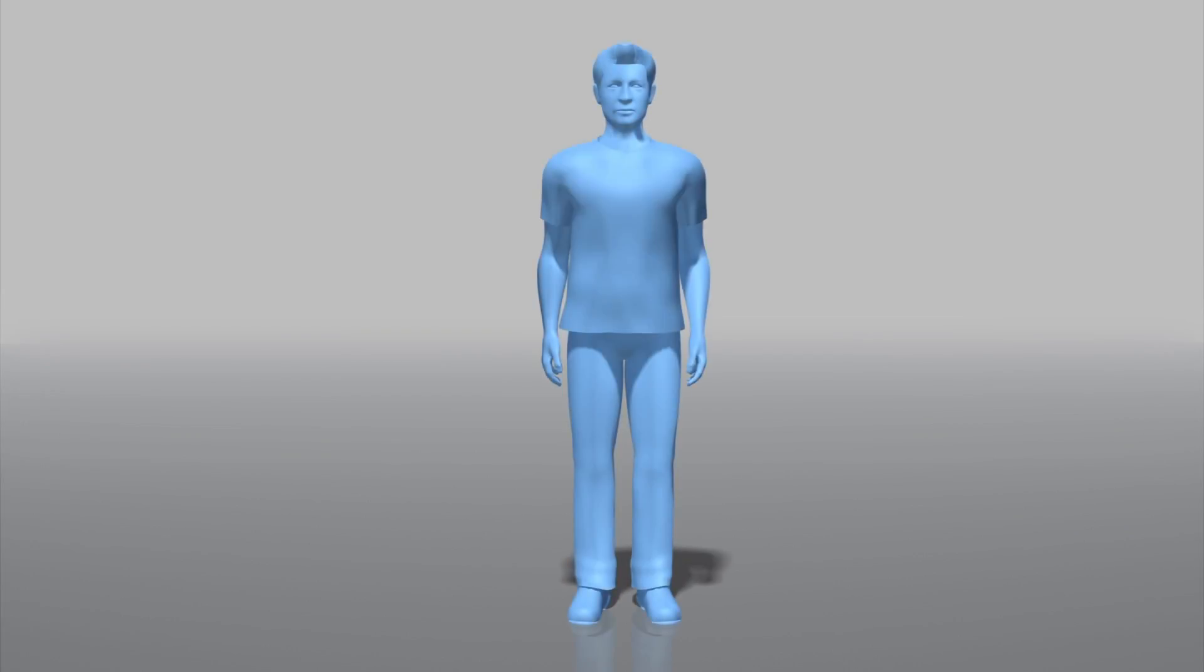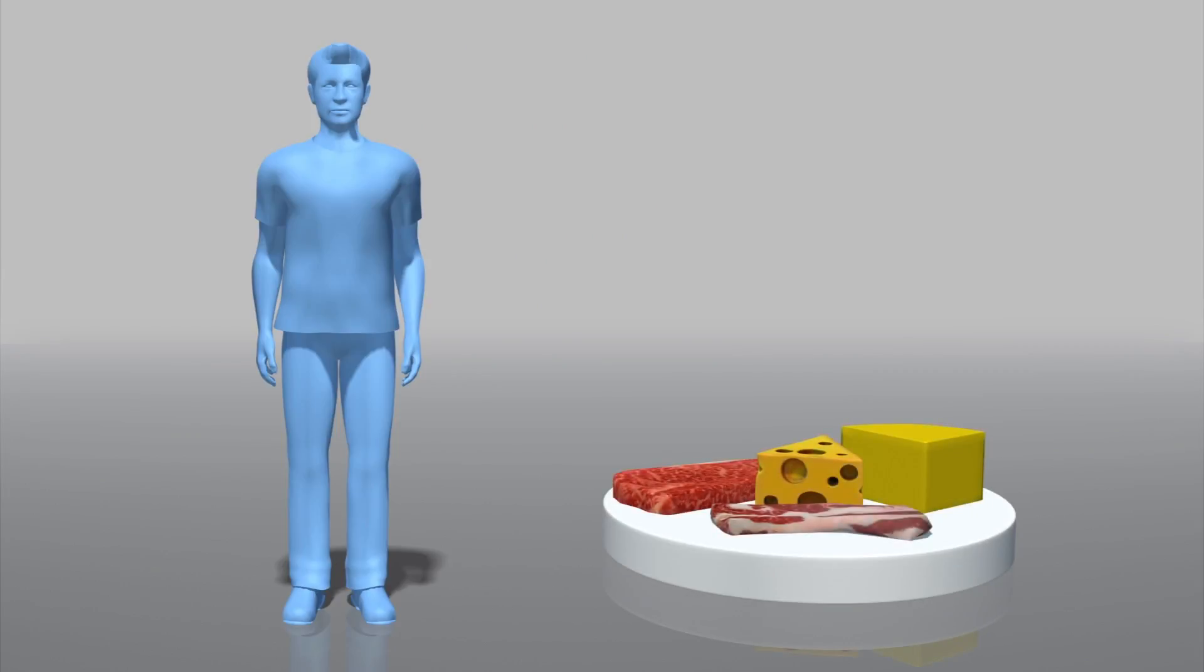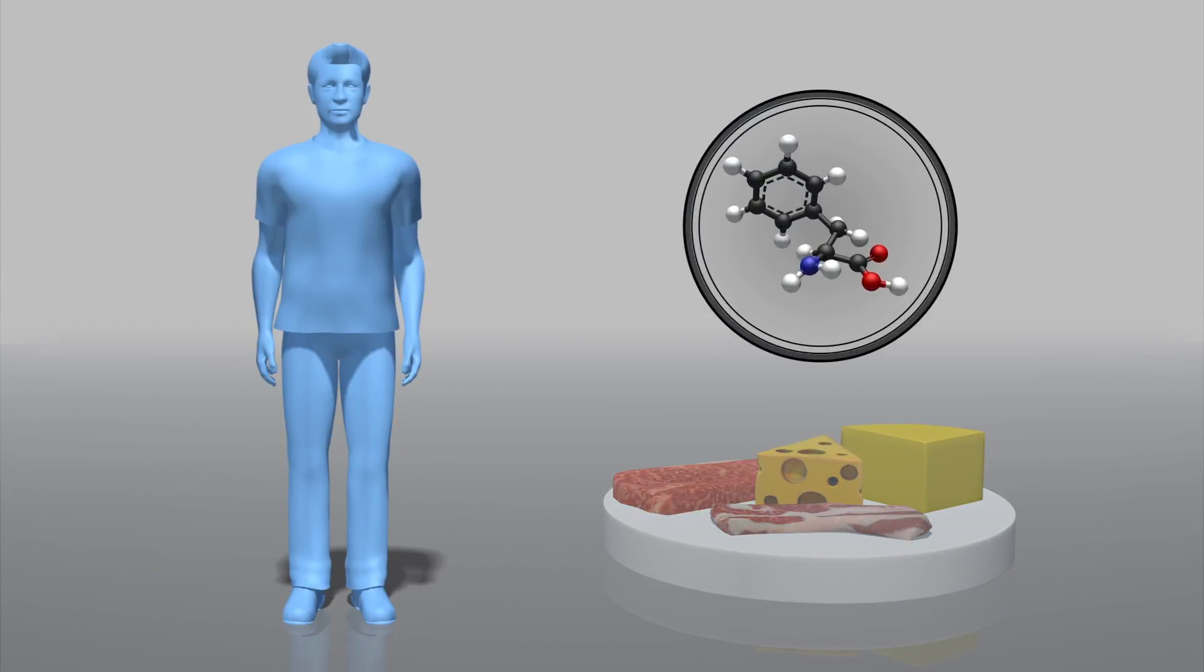People who suffer from phenylketonuria, or PKU, must avoid dietary protein in foods like meat and cheese because their bodies cannot break down the amino acid phenylalanine, or PHE.